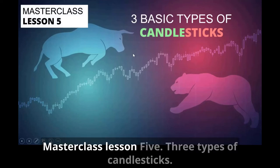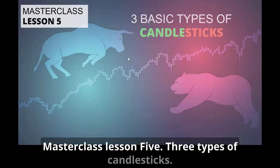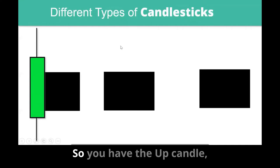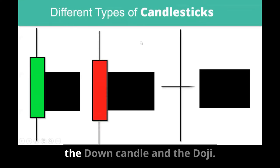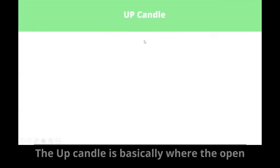Master class lesson five: three types of candlesticks. You have the up candle, the down candle, and the doji.